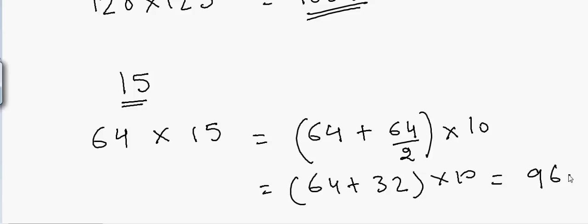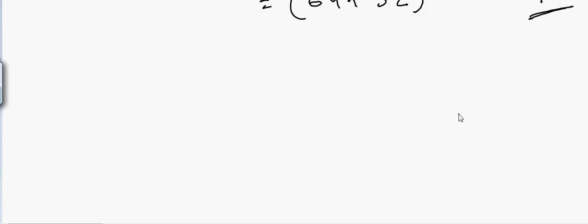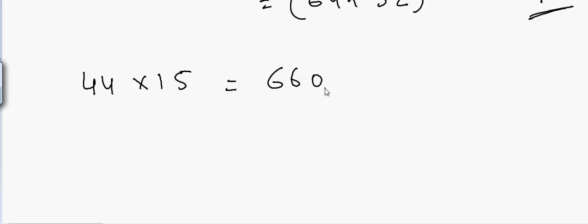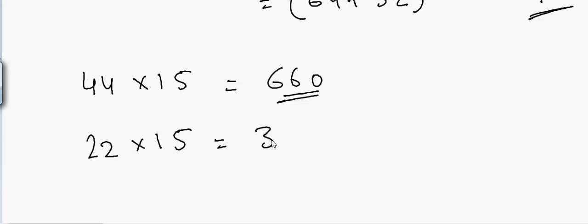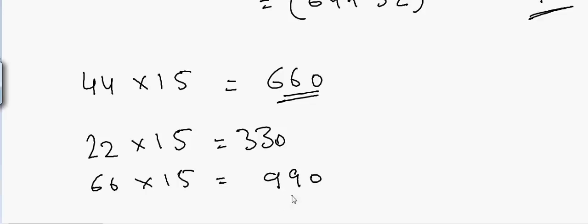Let's do it quickly. If I have 44 and want to multiply by 15: half of 44 is 22, so 44 + 22 = 66, then append a 0 — answer is 660. Similarly, 22 × 15 = 330, and 66 × 15 follows the same pattern. I'm using simple numbers here, but you can always apply this to more complicated numbers.